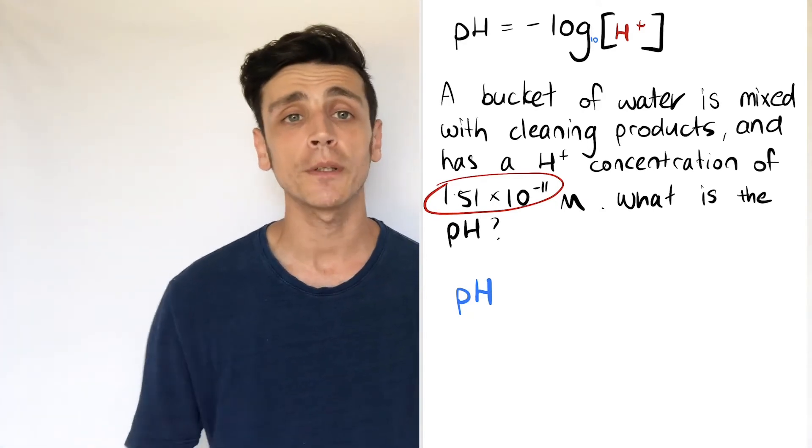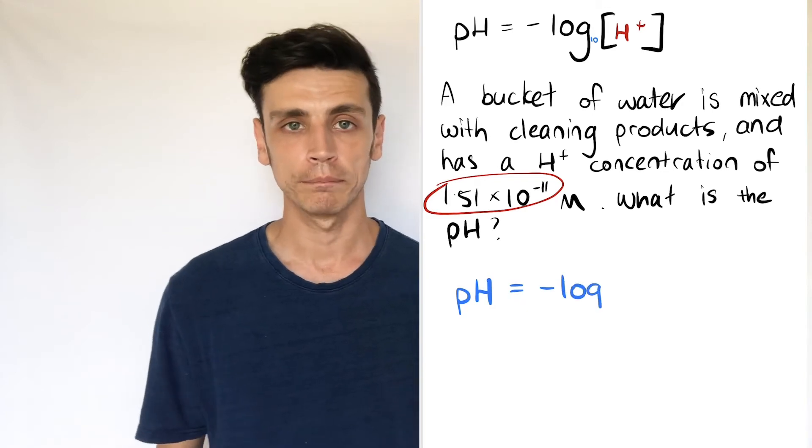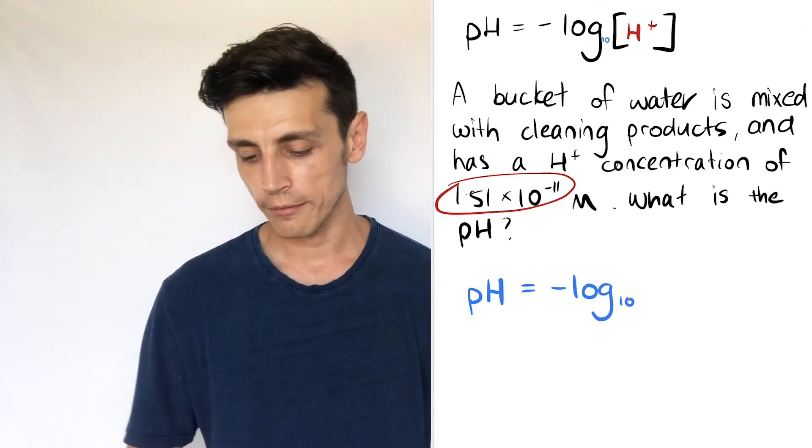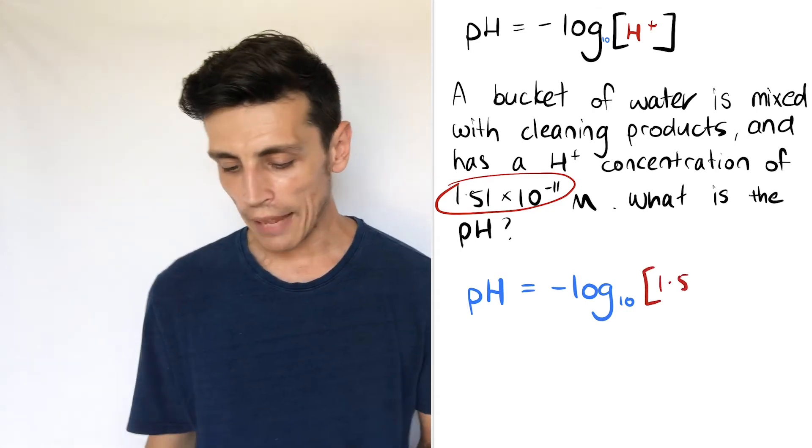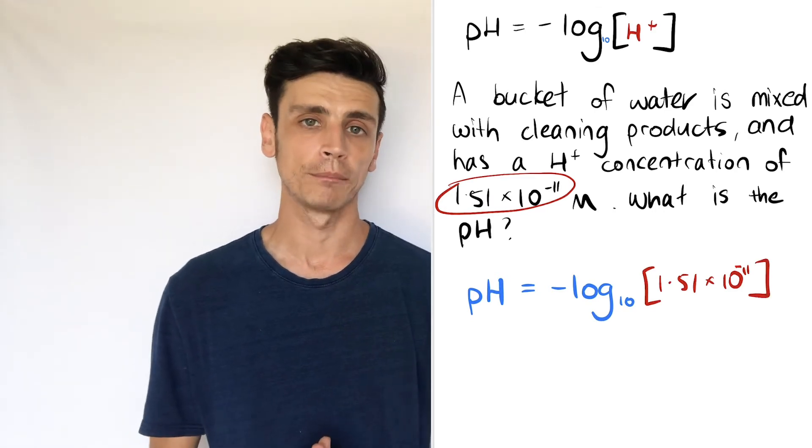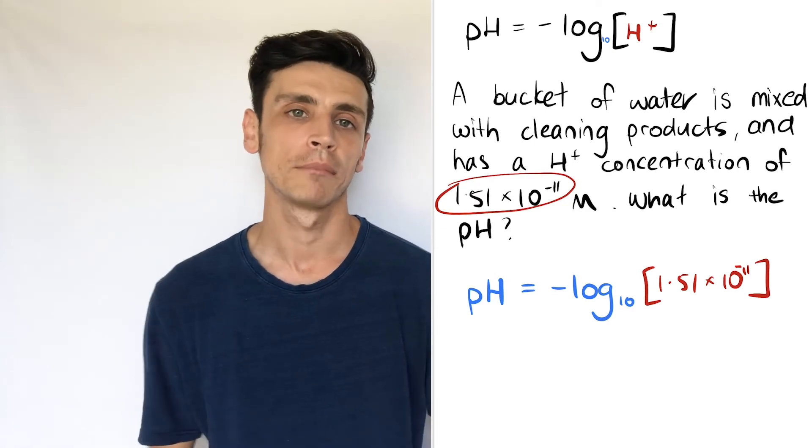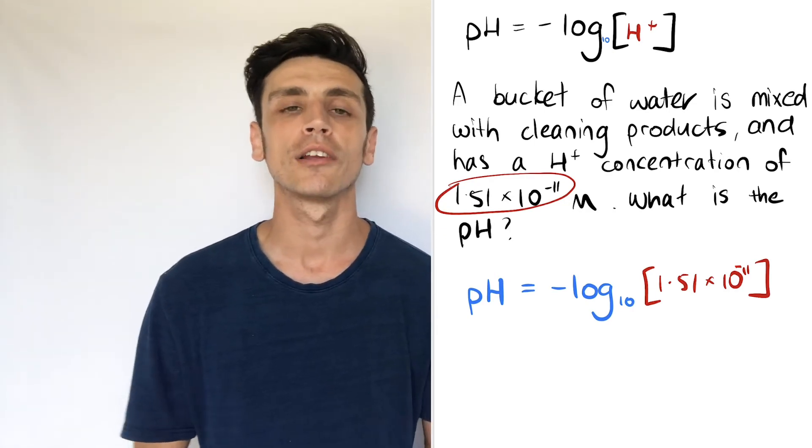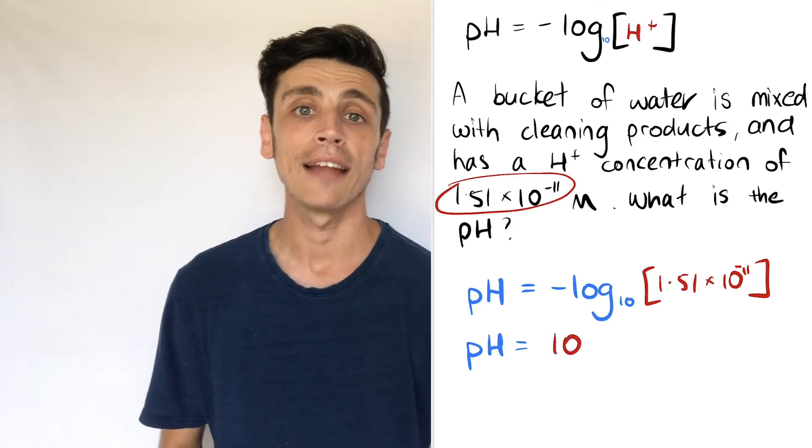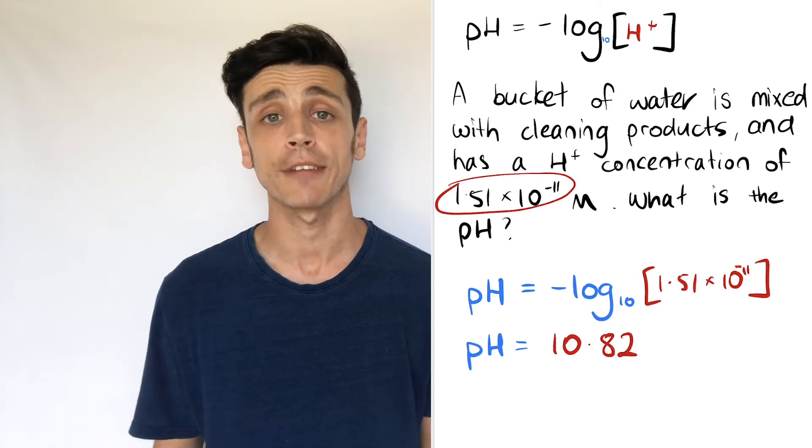All we have to do is put this value, our 1.51 times 10 to the power of negative 11, into our formula. So we put this into our calculator: negative log 1.51 times 10 to the power of negative 11. This is going to give us a value of 10.82, which makes sense because this is higher than 7 and going towards 14. It's probably a little bit diluted. I would probably expect it to be maybe closer to 11 or 12, so it could be a very diluted solution. But there you have it, that's how you calculate pH for that problem.